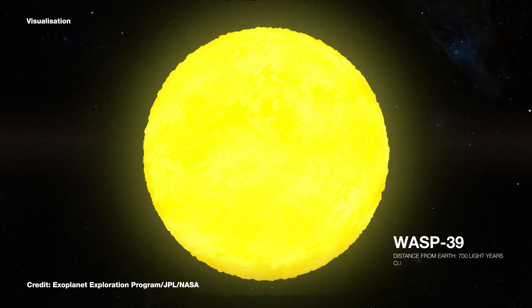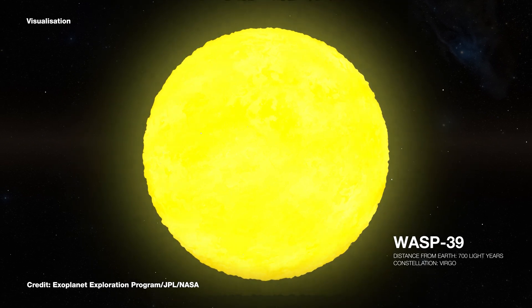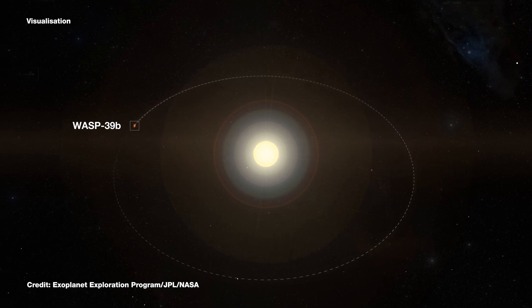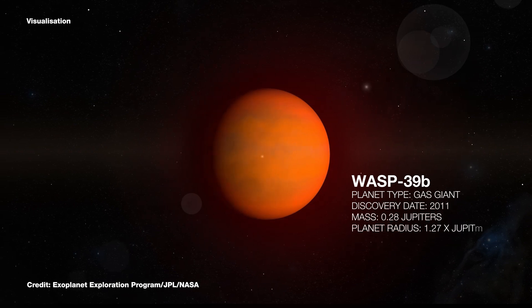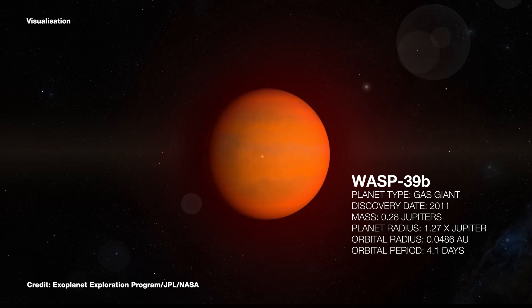Over the summer, I've been using the early release science data to understand what's happening in the atmosphere of WASP-39b and understand the presence of different molecules in its atmosphere. WASP-39 is a sun-like star in the constellation of Virgo, about 700 light-years away. Orbiting around it is the planet WASP-39b — a Saturn mass planet but the size of Jupiter. This means it's incredibly low density and it has a very extended atmosphere which is mostly made up of hydrogen and helium.